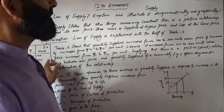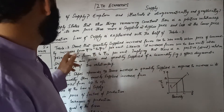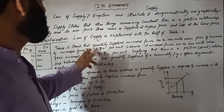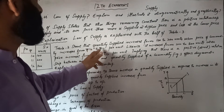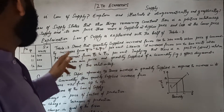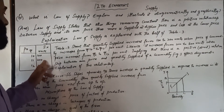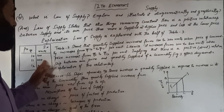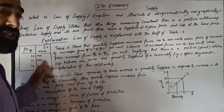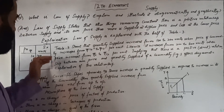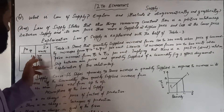Why does quantity supplied increase from 100 to 200? Because when the price of the commodity increases from 10 to 11, suppliers are incentivized to supply more, so supply increases.